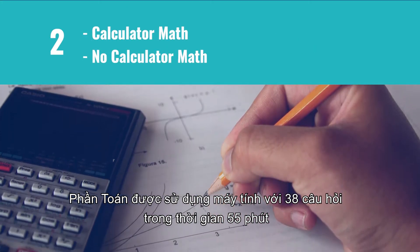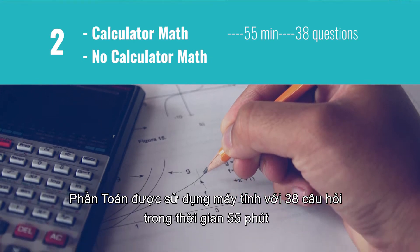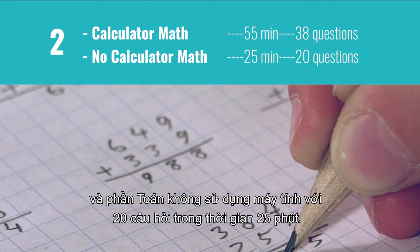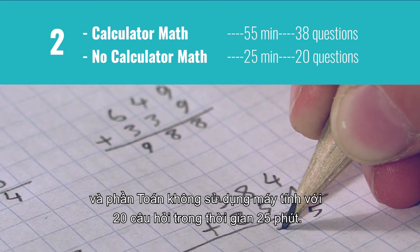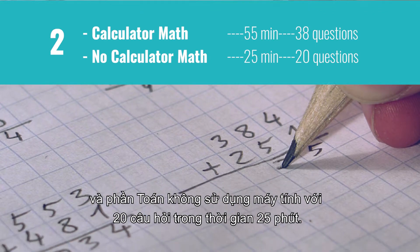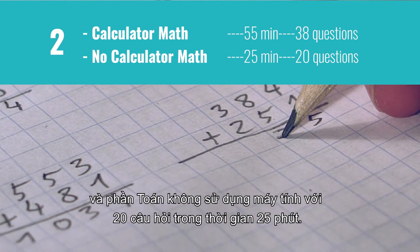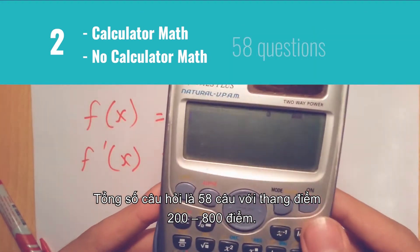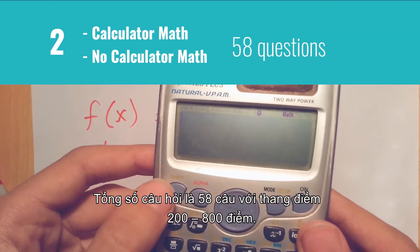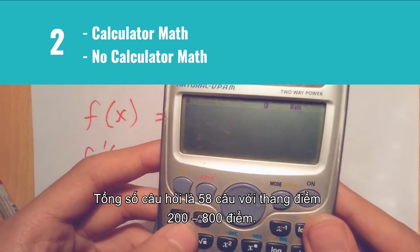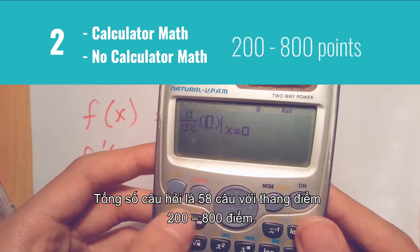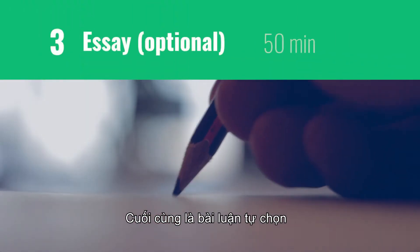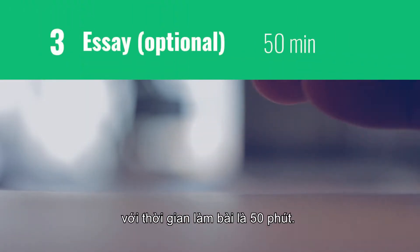Next is the 80-minute math section, divided into two parts: a calculator math section with 38 questions within 55 minutes, and a no-calculator math section with 25 questions within 25 minutes. The total number of questions is 58, with a total score of 200 to 800.